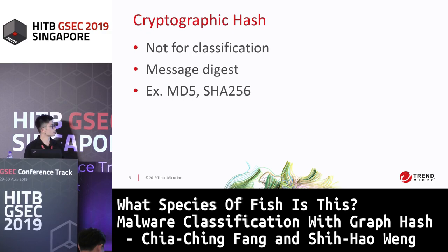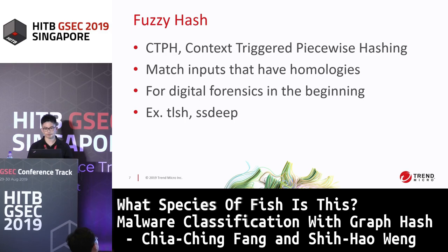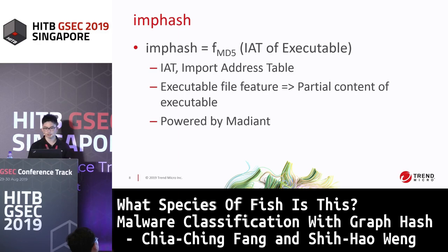The first category is crypto hash. Of course, they are not for malware classification per se. However, they are very basic, very useful, and widely used nowadays — they are used to look up if one sample exists in a malware repository. The second one is fuzzy hash, also called CTPH. They are used to match inputs that have homologous regions. In the beginning, they were for digital forensics — such as TLSH and SSDEEP. Until now, the methodologies we've been talking about operate on the whole executable file.